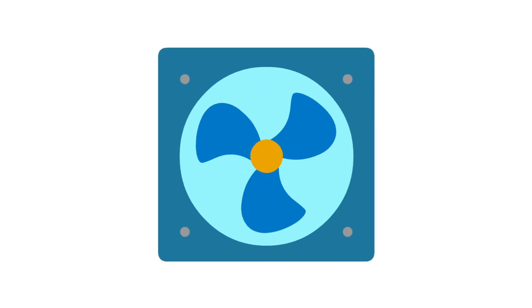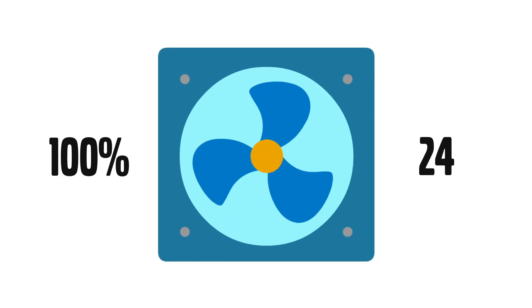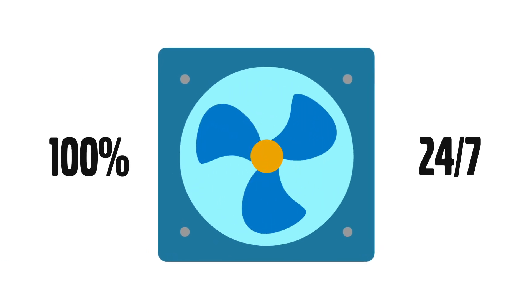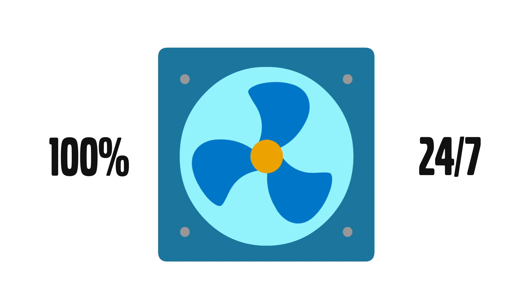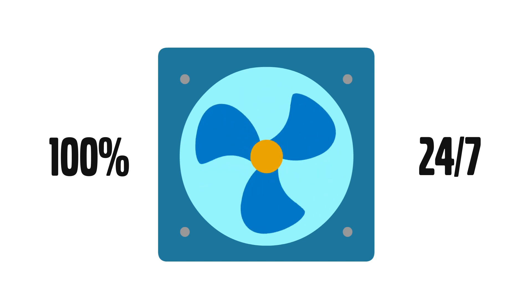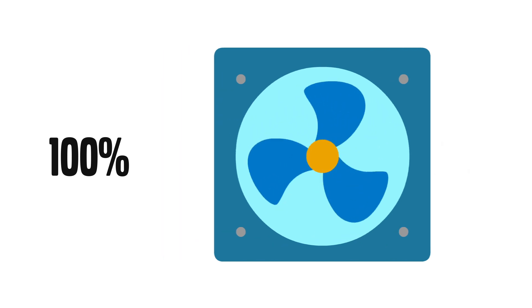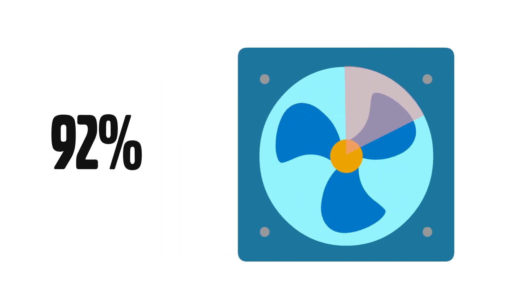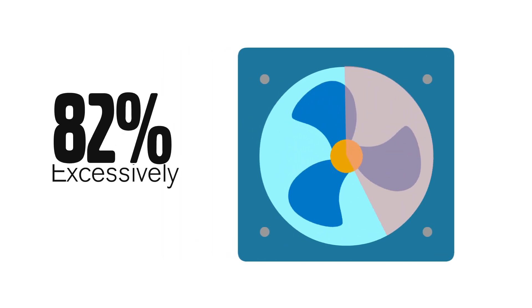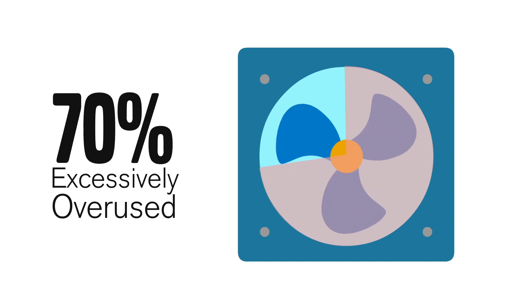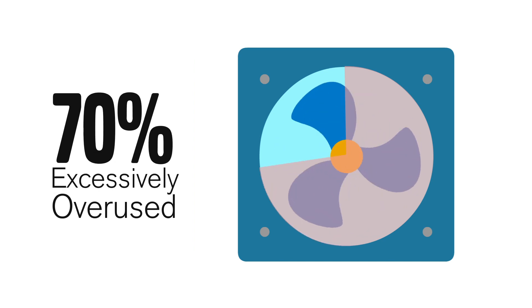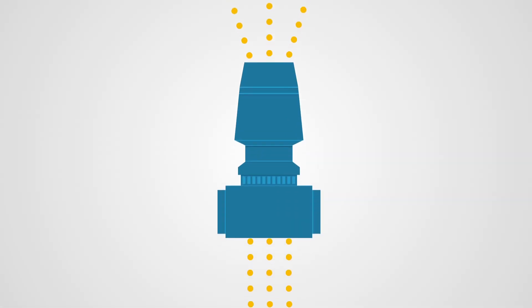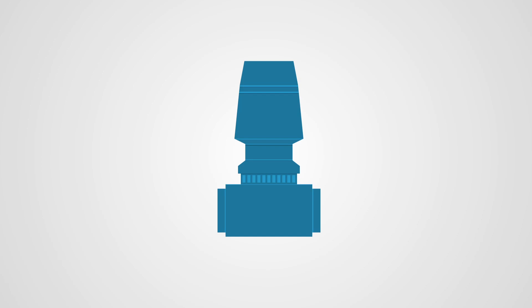The fans run at full dilution 24 hours a day, 7 days a week, on the assumption your lab's exhaust air is always contaminated. In reality, lab exhaust air is typically clean more than 70% of the time, which means there is a tremendous opportunity to save energy by lowering your fan's exit velocity when your lab's exhaust air is clean.